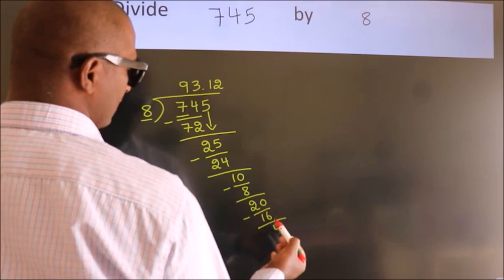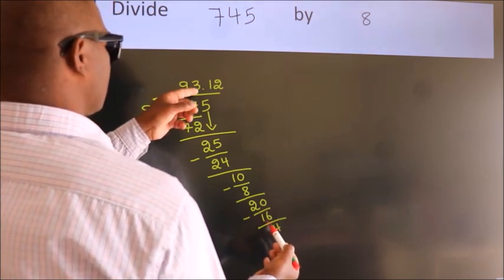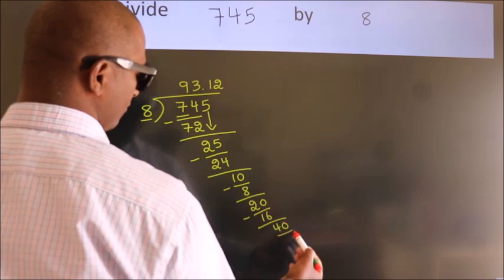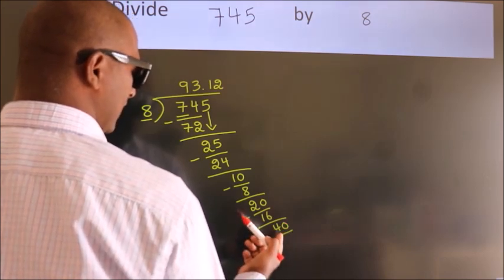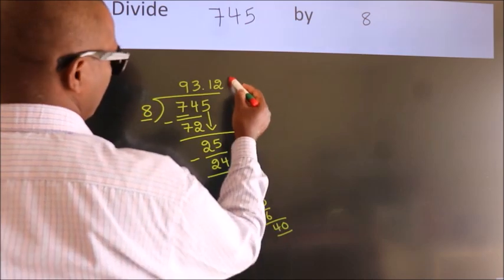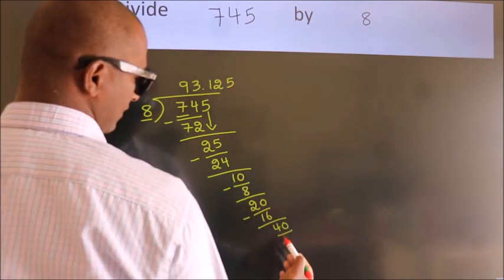After this, we already have the decimal. So, directly take 0. So, 40. When do we get 40 in 8 table? 8 fives, 40.